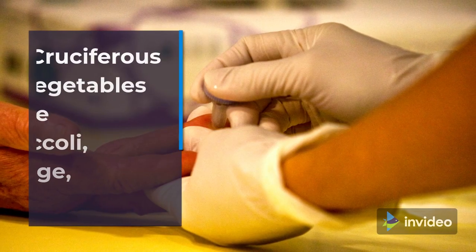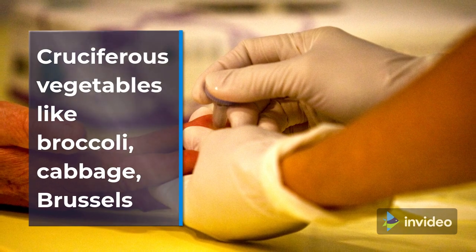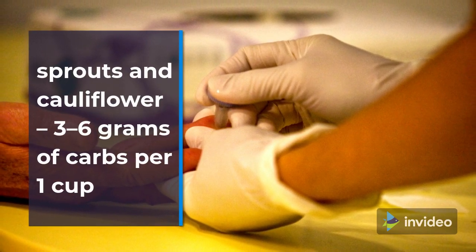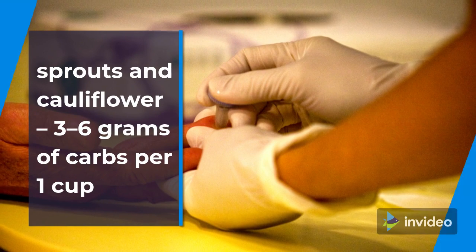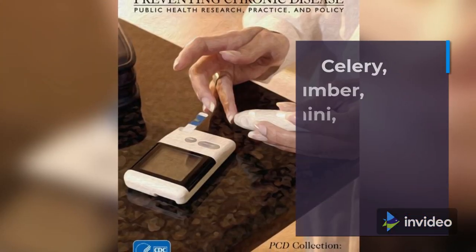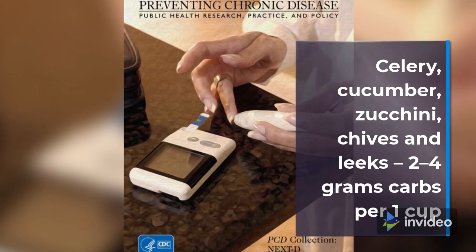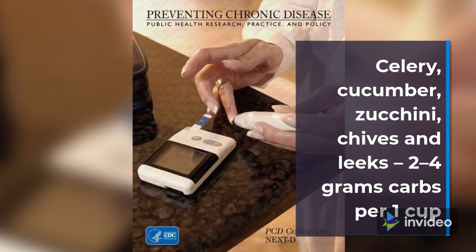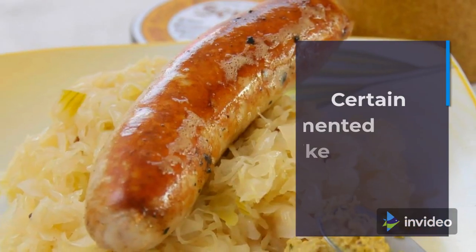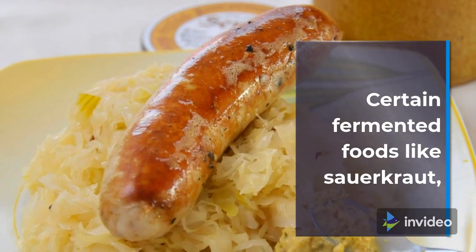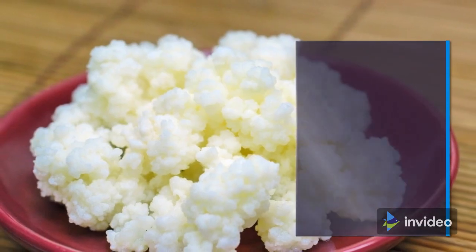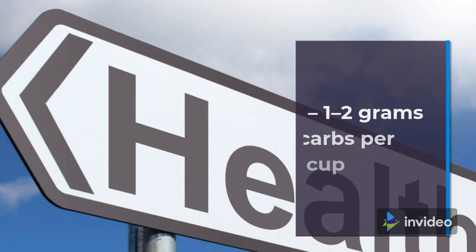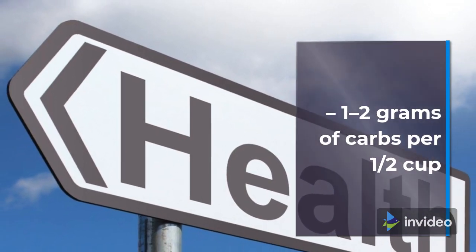Cruciferous vegetables like broccoli, cabbage, Brussels sprouts, and cauliflower — 3 to 6 grams of carbs per 1 cup. Celery, cucumber, zucchini, chives, and leeks — 2 to 4 grams of carbs per 1 cup. Certain fermented foods like sauerkraut, kimchi, and coconut kefir are also beneficial for gut health — 1 to 2 grams of carbs per half cup.